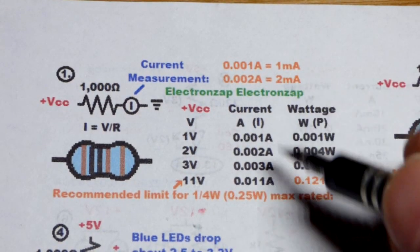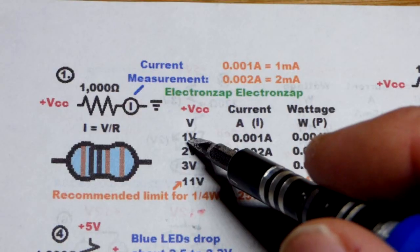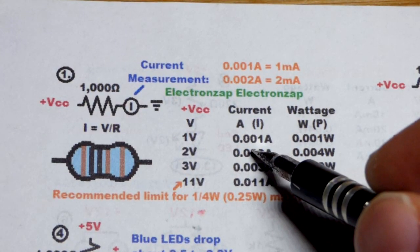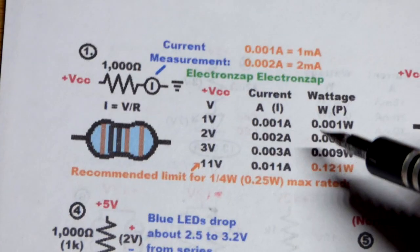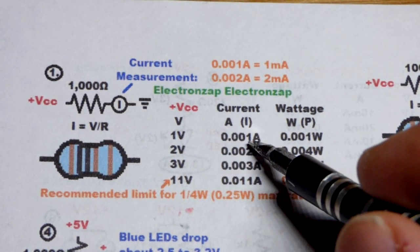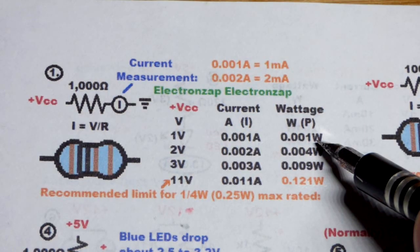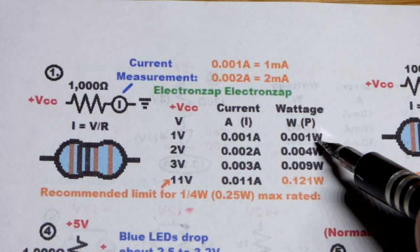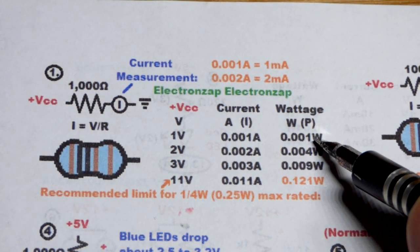Although one volt will get you one milliamp. So we have that together though, they make the wattage, how much heat is going to be produced. So you can see one volt, one milliamp of current, one milliwatt or 0.001 watt. Very straightforward.